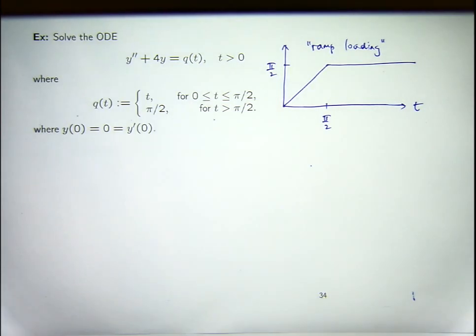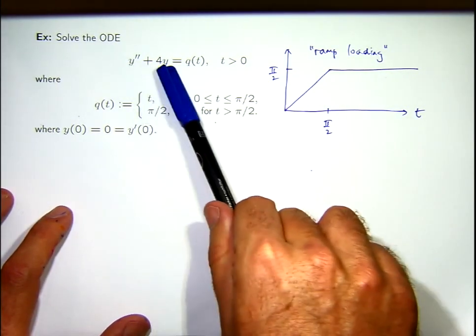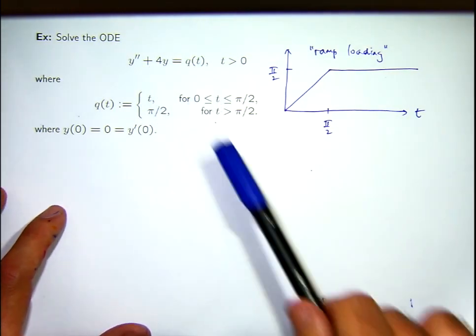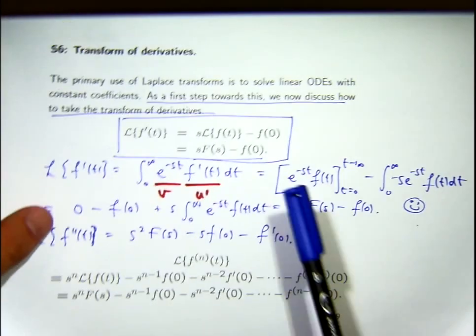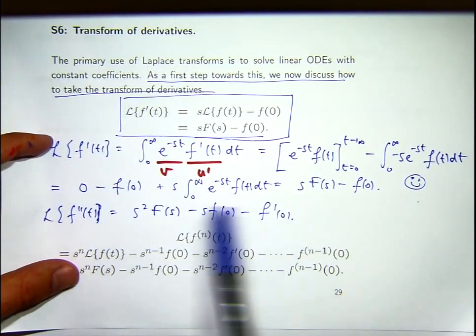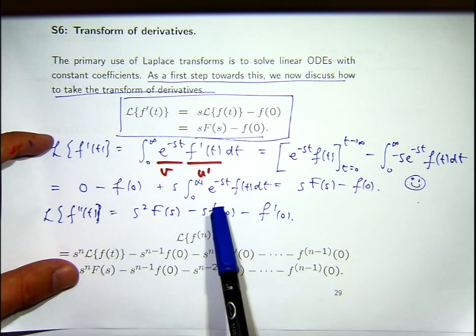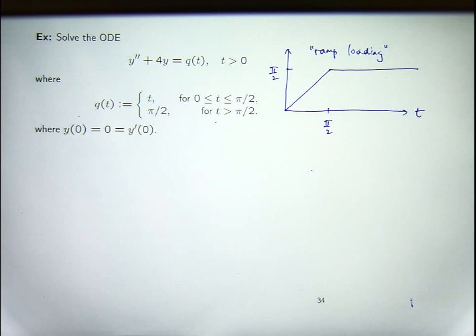For this problem, we start with the differential equation and we're going to take the transform of both sides. On the left-hand side we can use the transform of derivatives idea — we've got the second derivative and just y. But for the right-hand side, how do you take the Laplace transform of Q of T? What I'm going to do is express Q of T in terms of a Heaviside step function.